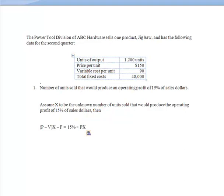You've seen all these pieces before. Price minus variable cost is my contribution margin. X is my unknown number. F is my fixed costs, right? 15% is what I want my profit to be. And P times X, price times units, is going to be my revenue. Now I've just got to solve.